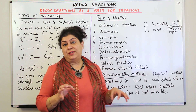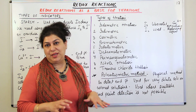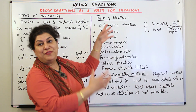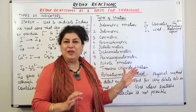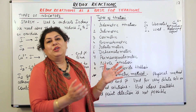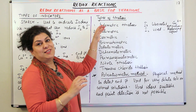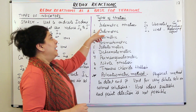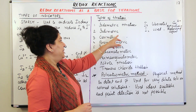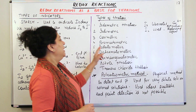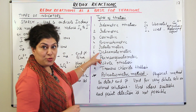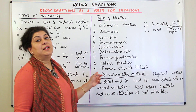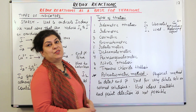Redox titrations are of nine kinds. Iodine has two types of redox titrations. The different names of these titrations are: iodometric, iodimetric, cerimetric, bromatometric, iodatometric, dichromatometric, permanganatometric, nitric titration, and titanous chloride titration. These are just listed for your information — they are not in your syllabus.